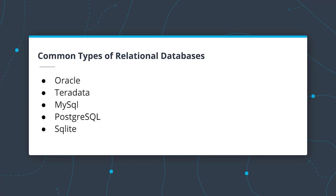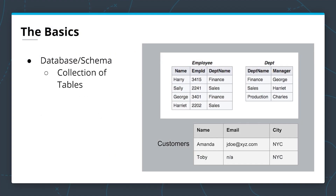Some common types of relational databases — and there are many more — include Oracle, Teradata, MySQL, Postgres, and SQLite. These are roughly ordered by enterprise production readiness. Oracle is used by almost every enterprise as their system of truth for handling transactions — banking systems, for example, run on Oracle. In contrast, SQLite is a database in file format, generally used in development or for extremely simple tasks in an application.